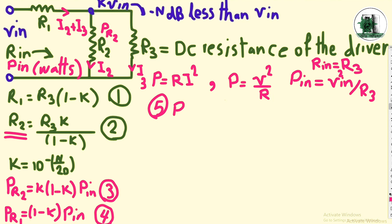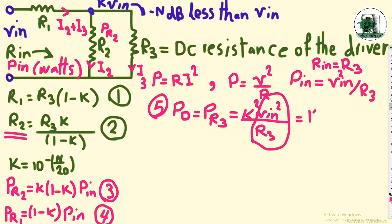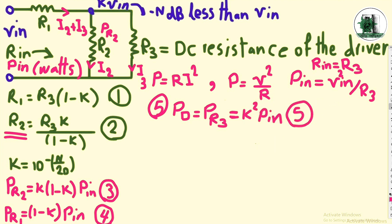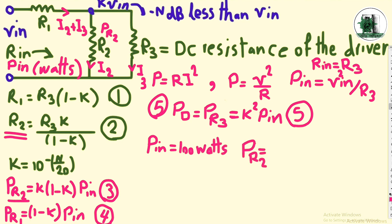For the driver, we can write the consumed power expression. Now, if we determine the input power as 100 watts, these values will be obtained for R1, R2, and R3, which are the same as the website values.